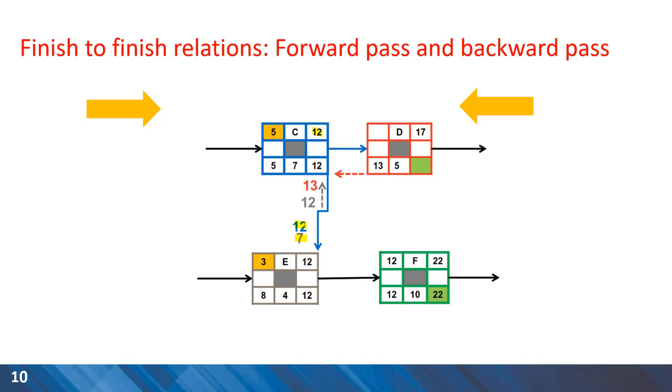Another option that we have is coming from activity C. So early finish time of 12 is our second option for activity E. Because we are in the forward pass, the longest date is accepted. So 12 will be the early finish time for activity E. Again, I encourage you to pause the video and concentrate on the calculations for backward pass.